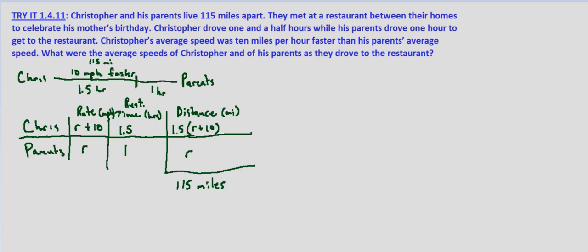Now in the last exercise that we went over, the distances were the same distance. In this case, the distances as we showed in our first diagram are not the same, but what we do know is that the sum of both distances traveled - the distance traveled by Chris and the distance traveled by his parents - is 115 miles.